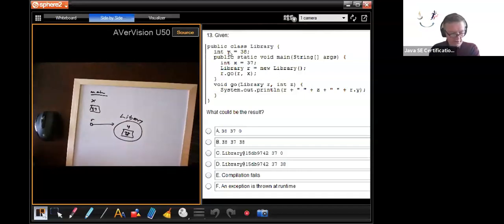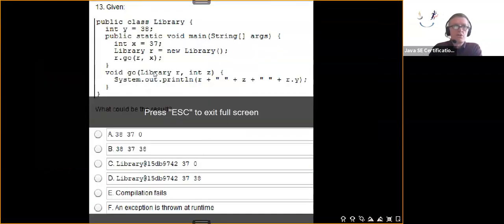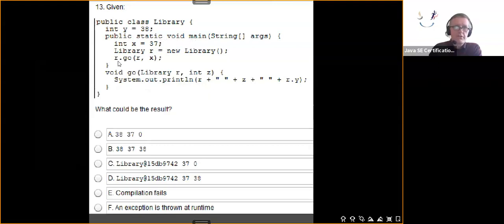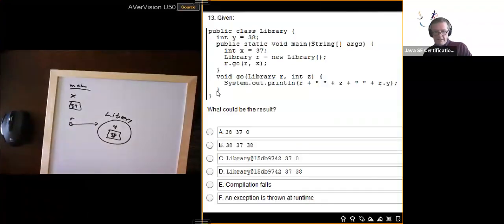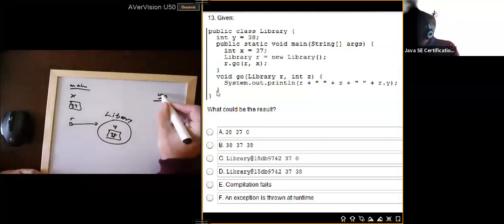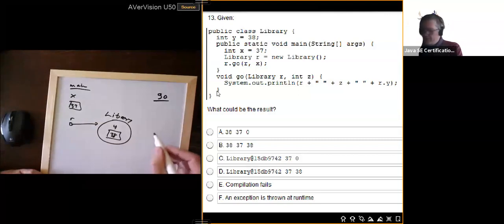We then call the go method, r.go. Notice that go here is an instance method and you're going to be calling from a static context, it's the main static method, so you need a reference before it. We're passing down r, when it's going to be called r down here, and x is going to be called z down there. So basically inside the method go we have an r reference, it's called r, and...